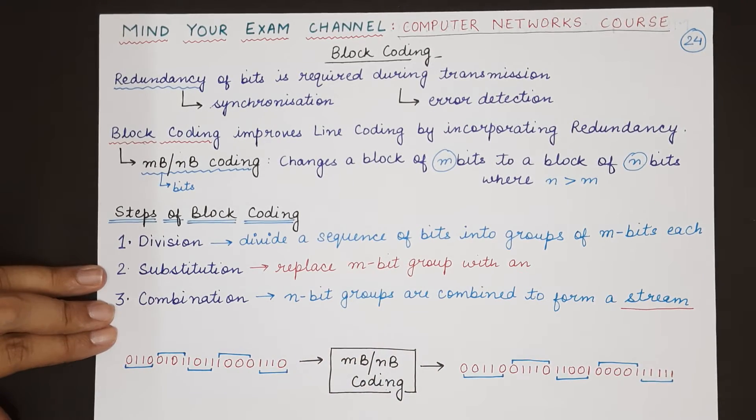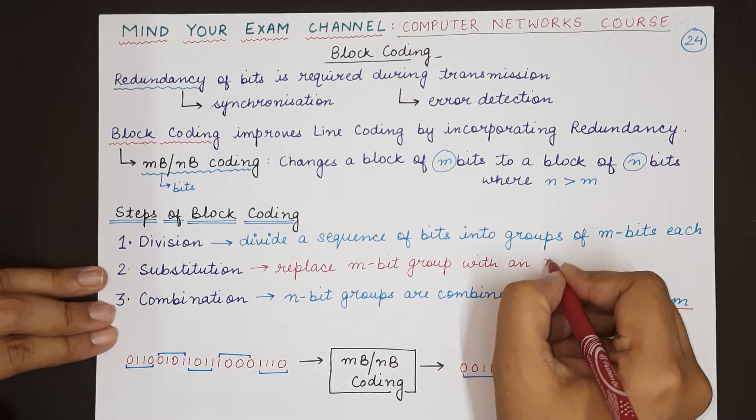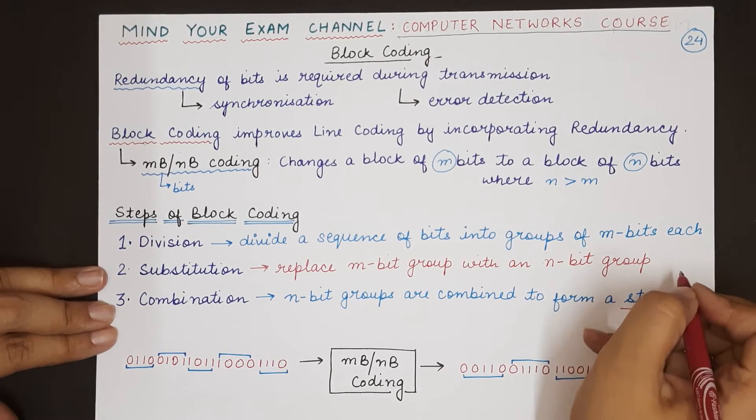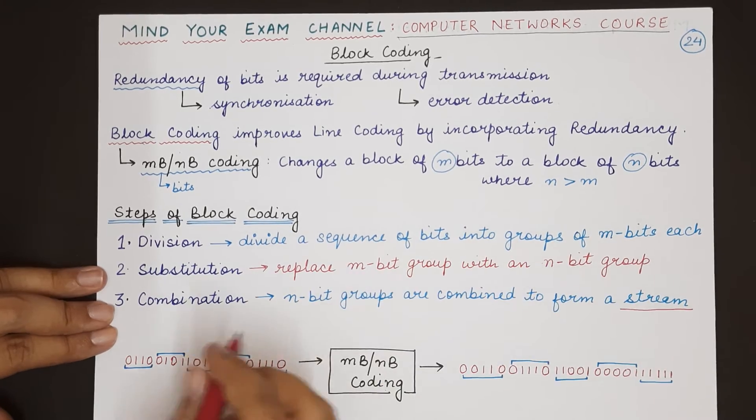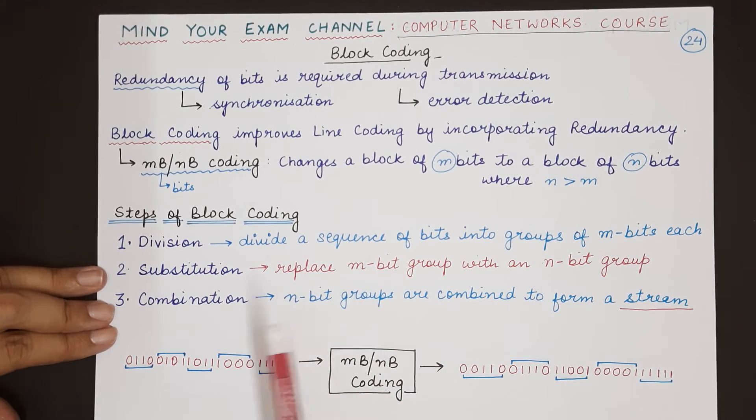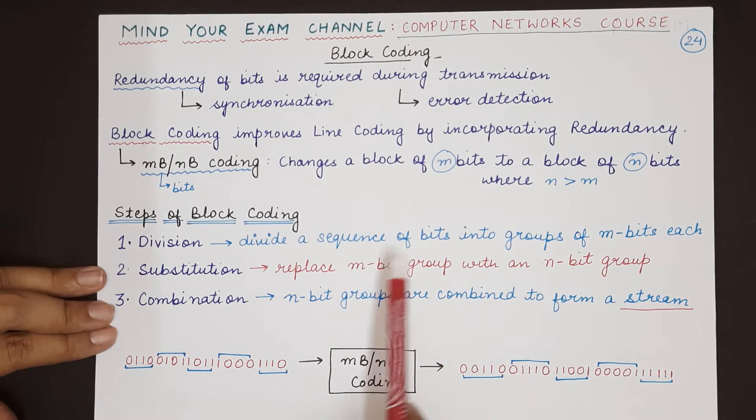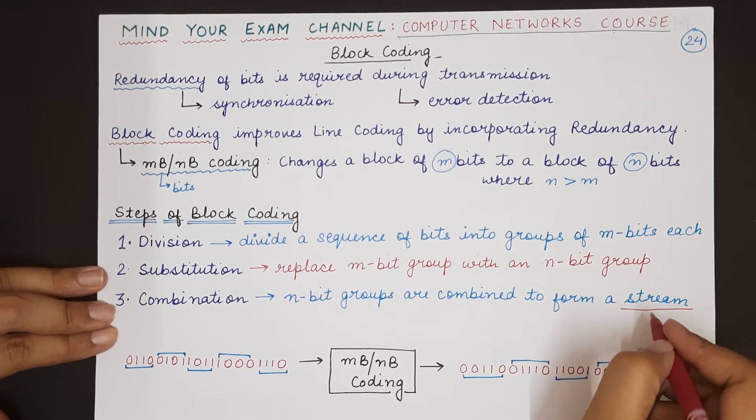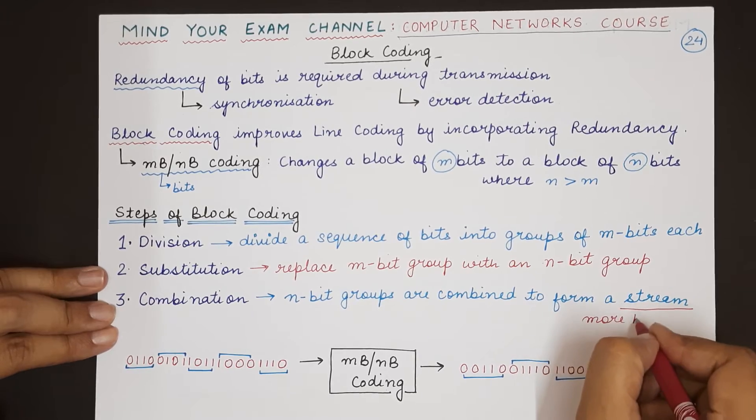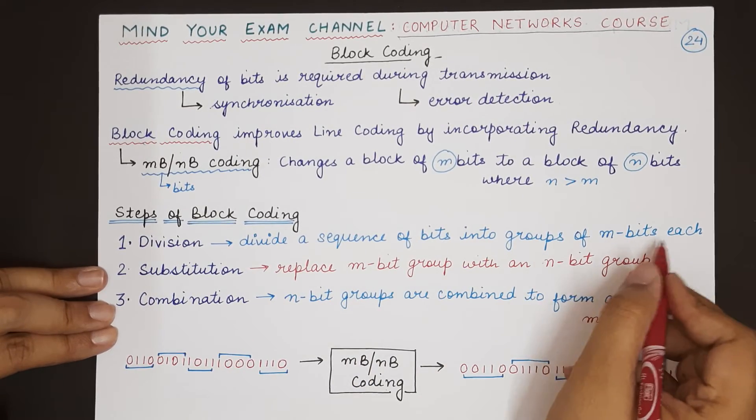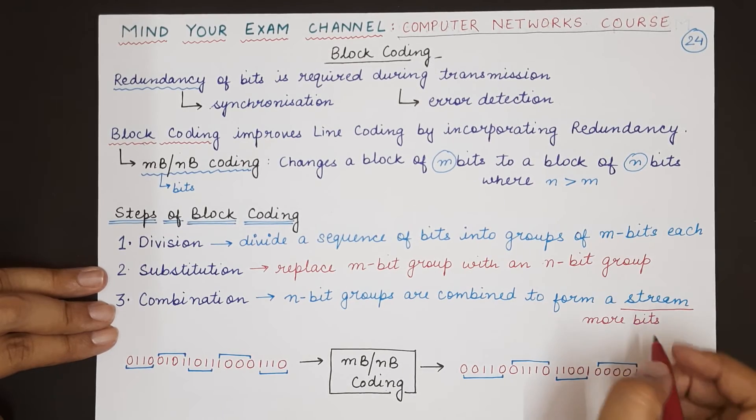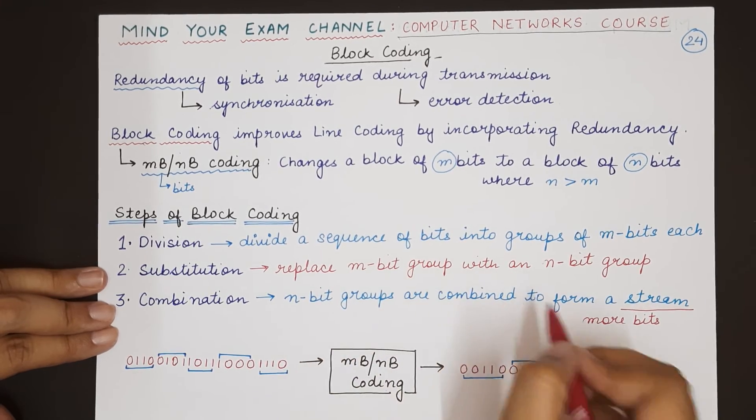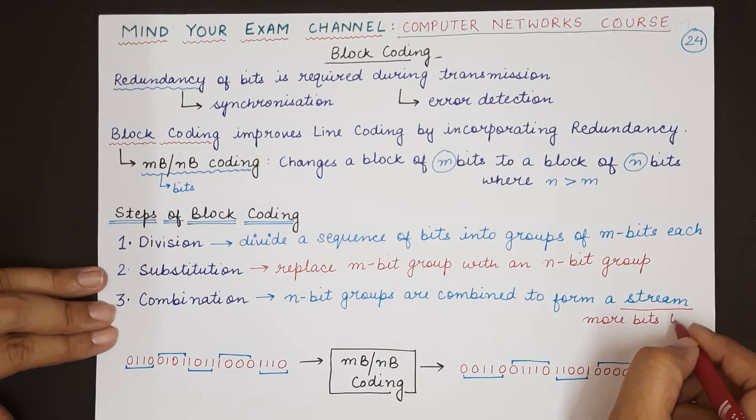Once you have divided the entire stream of data into groups—also known as blocks—such that each block contains m bits, you have to replace each m-bit group with an n-bit group. Each group of bits will be replaced with a new group of bits containing n bits. Once you have got these n-bit groups, the n-bit groups will be combined together again to form a continuous stream of data. This stream will have more bits than the original bit stream that was divided into m-bit groups.